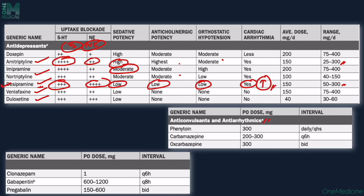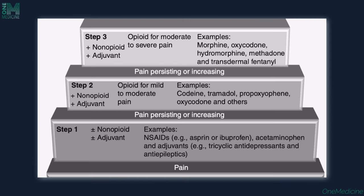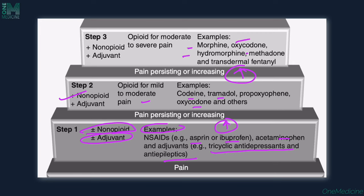Anti-convulsants and anti-arrhythmic drugs used in chronic pain include phenytoin, carbamazepine, oxcarbazepine, clonazepam, gabapentin, and pregabalin. To summarize chronic pain management: start with non-opioids or adjuvants (NSAIDs, aspirin, ibuprofen, acetaminophen, tricyclic antidepressants). If pain persists, add mild-to-moderate opioids like codeine, oxycodone, or tramadol. If still persisting, step up to stronger opioids like morphine, oxycodone, hydromorphone, methadone, or transdermal fentanyl. Always consider combining opioids with COX inhibitors for additive effect and reduced individual side effects.